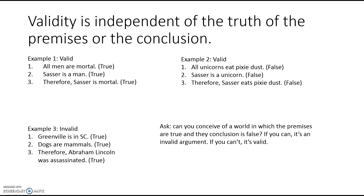Validity is independent of the truth of the premises or the conclusion — it has nothing to do with whether the premises or even the conclusion are true or false. Look at example one: all men are mortal (true), Sasser is a man (true), therefore Sasser is mortal (true). This argument is valid, and all premises and conclusion happen to be true. But look at example two, which is just as valid: all unicorns eat pixie dust (false), Sasser is a unicorn (false), therefore Sasser eats pixie dust (false). That argument is just as valid, because if the premises were true, the conclusion would have to be true.